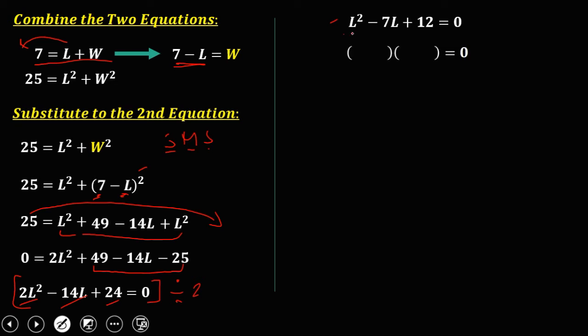So factors of L squared, that's L times L. Factors of 12, that's 3 and 4. So if we're going to check, this one is 3L, this one is 4L, so 3 plus 4, that's 7L. So therefore, both negative.